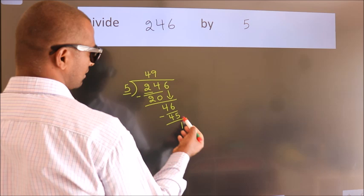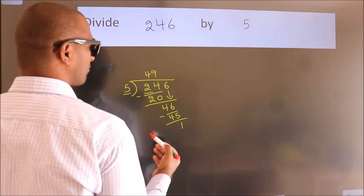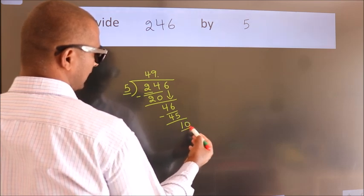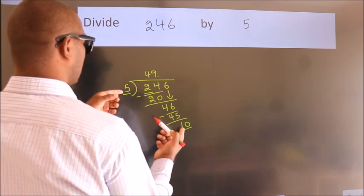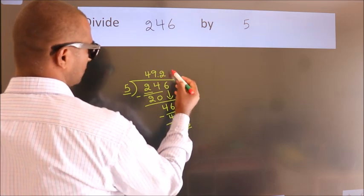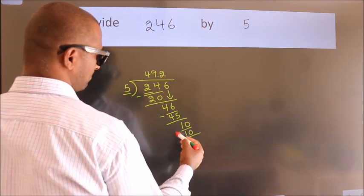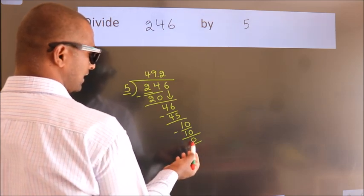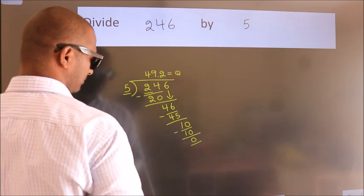After this, no more numbers to bring down. So, what we do is, we put dot take 0. So, 10. When do we get 10? In 5 table, 5 twos 10. Now, we subtract. We get 0. We got remainder 0. So, this is our quotient.